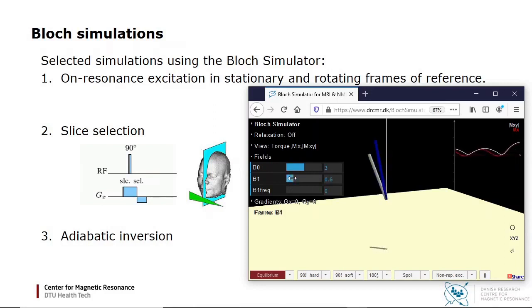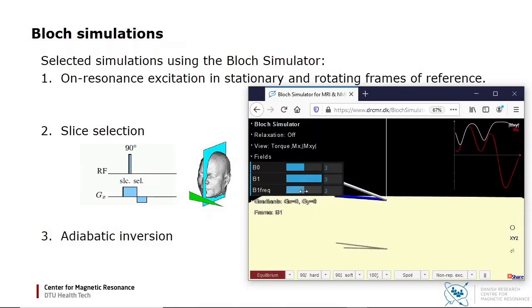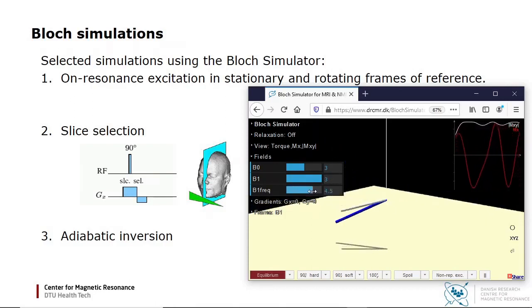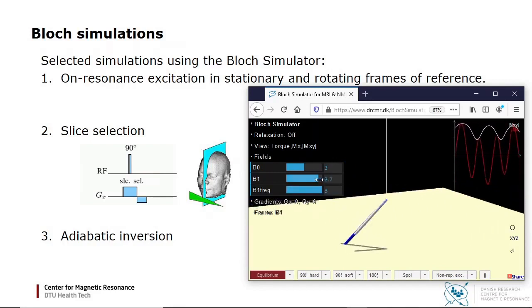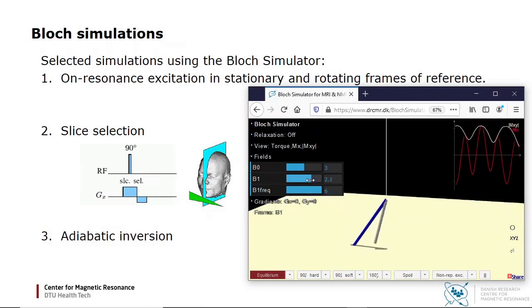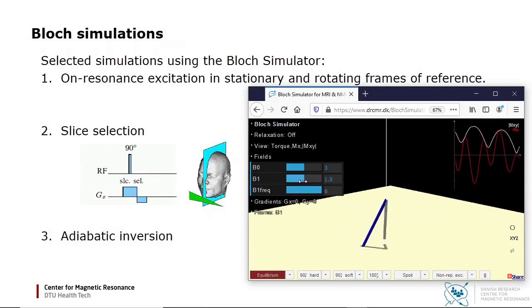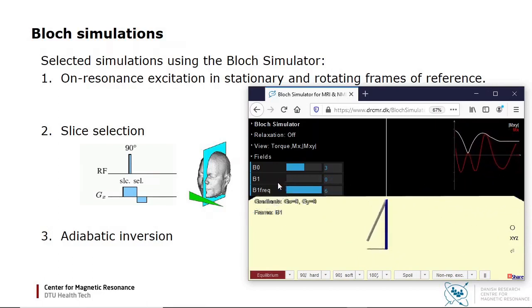I now turn on a weak B1 field. Since it is applied far off resonance, the effective field vector is near longitudinal initially, and the magnetization precesses around it. When I ramp up the B1 field amplitude gradually, the magnetization will therefore follow the effective field vector. Now I am applying a strong field far off resonance. I now gradually sweep the field through resonance, and finally decrease the amplitude. The result is an approximate inversion of the magnetization, which at all points stayed close to the effective field vector.